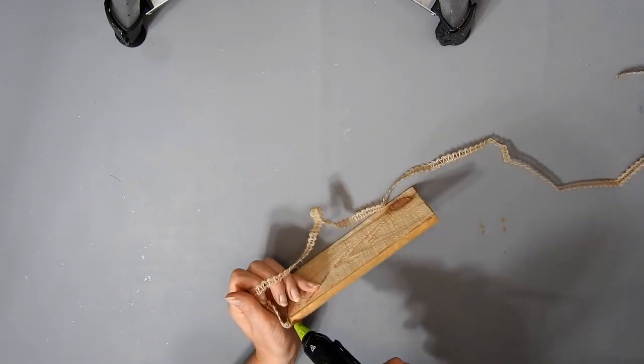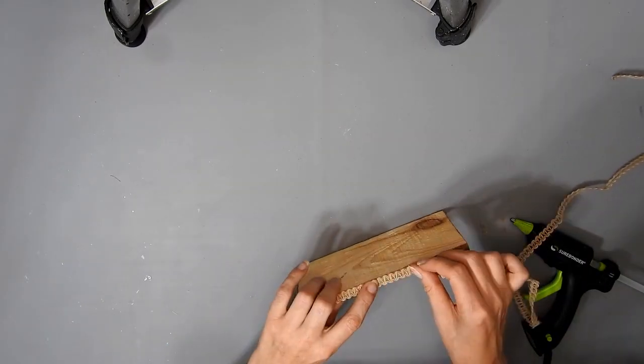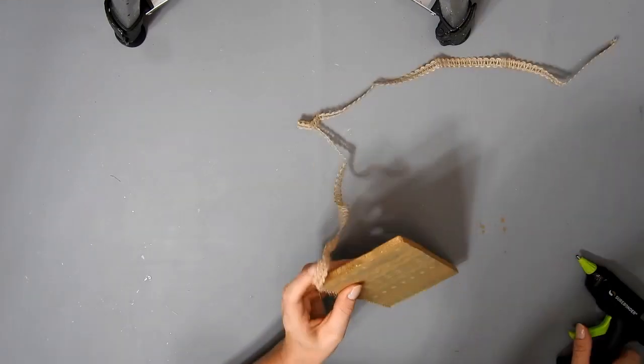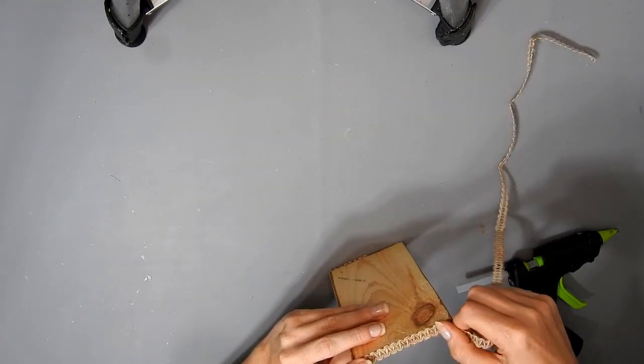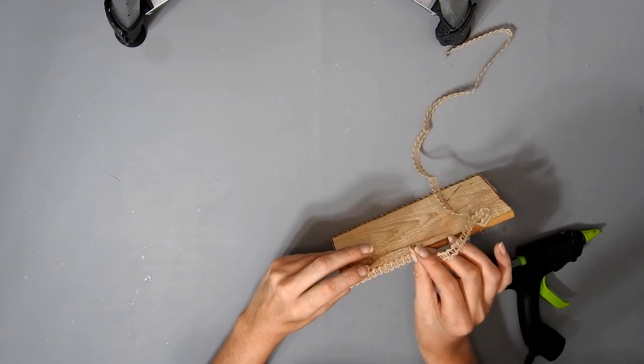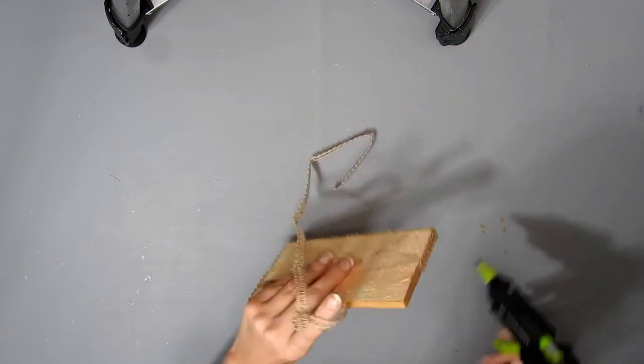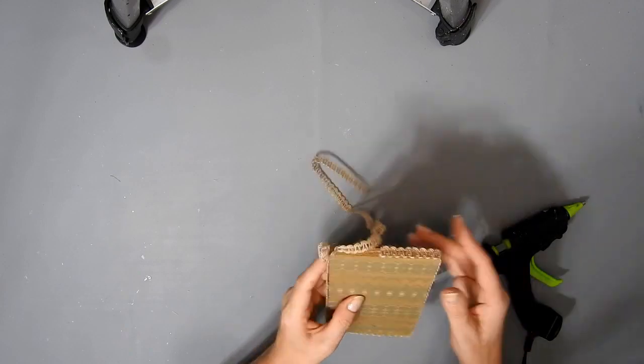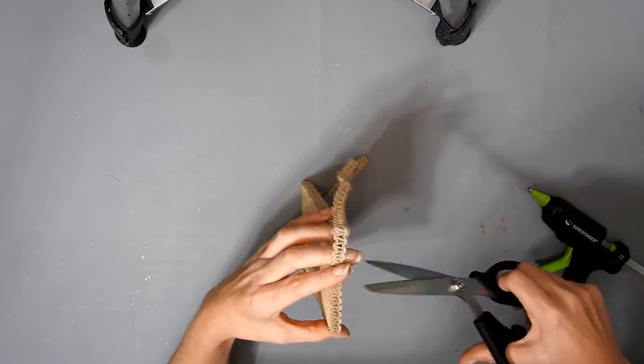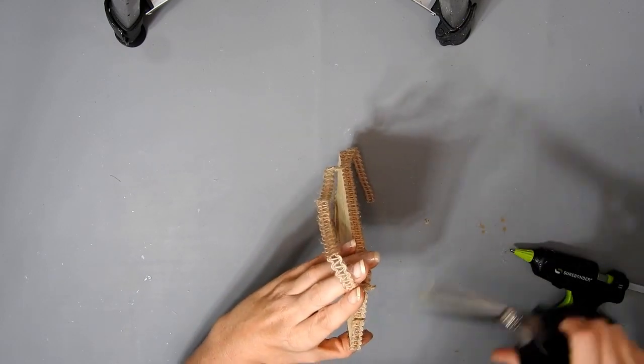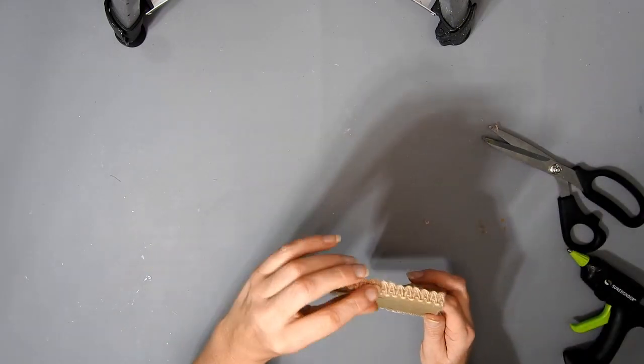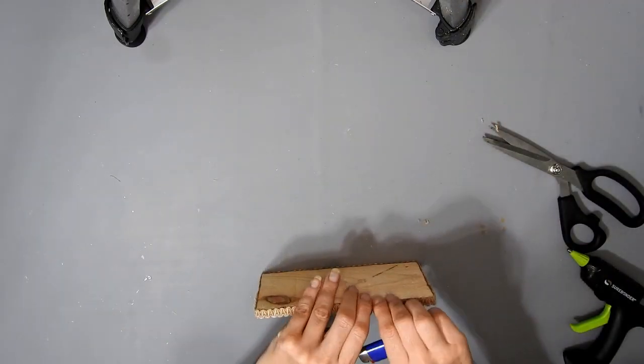Now I'm just using the middle ribbon out of that pack of three burlap ribbons and I'm just hot gluing it around the edge just to make it look more finished. Just watch you don't burn your fingers because if you put too much it seeps through. Then I just trim off the end and glue it down.